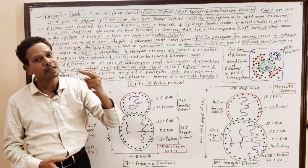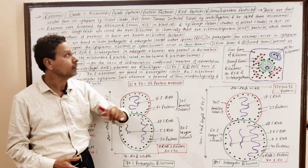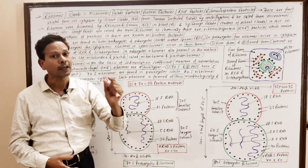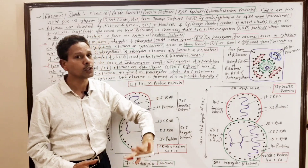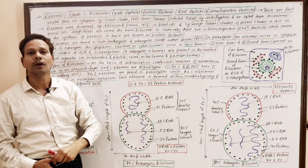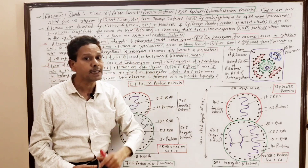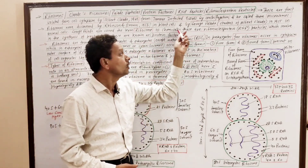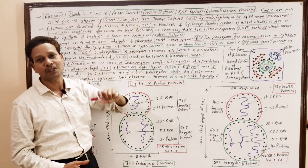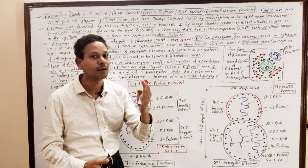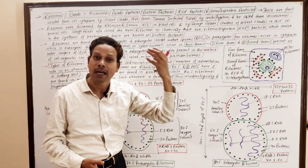These ribosomes were first isolated by Albert Claude in 1943 during centrifugation of tumor-infected tissues, and he coined the term microsomes — so these are named Claude's microsomes. First of all, these were discovered by Robinson and Brown in 1953 in plant cells. While in animal cells, these were discovered by George Palade, who was a student of Albert Claude. In 1955, he coined the term ribosomes, so these are named Palade particles.